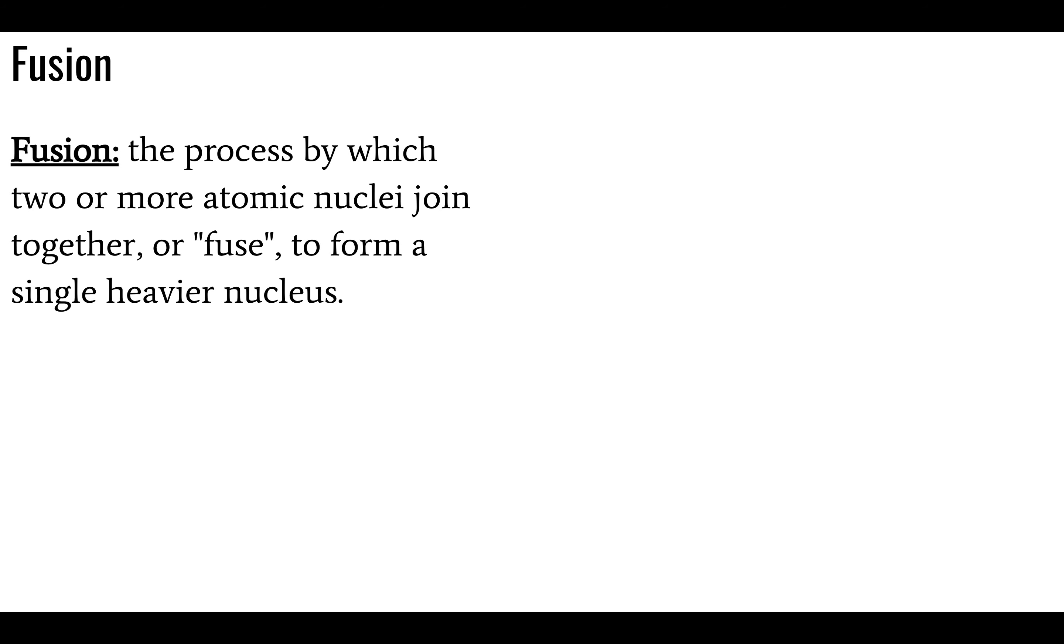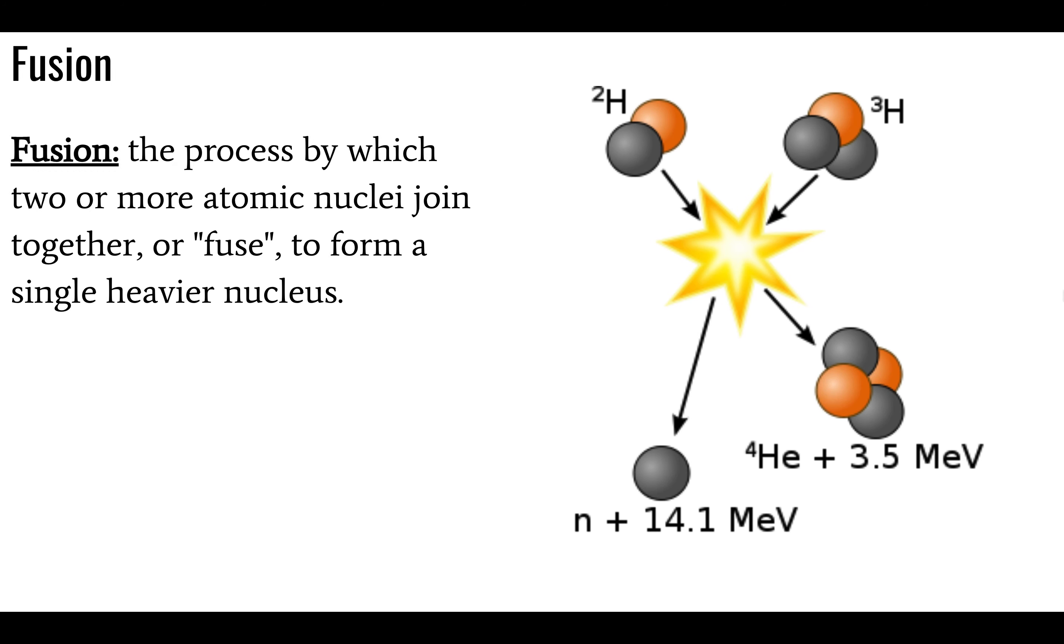First let's look at fusion. Fusion is a process by which two or more nuclei join together, or fuse, thereby forming a single heavier nucleus. In this example, we have hydrogen isotopes, deuterium and tritium, and they fuse to form helium and a whole lot of kinetic energy and a free neutron.